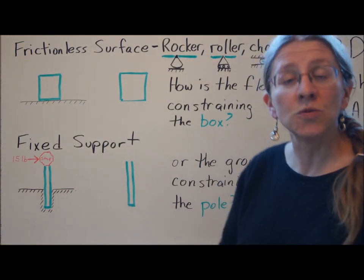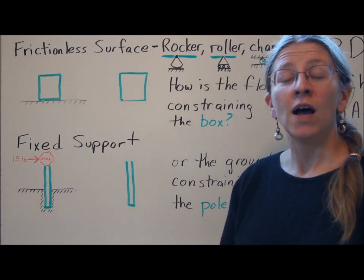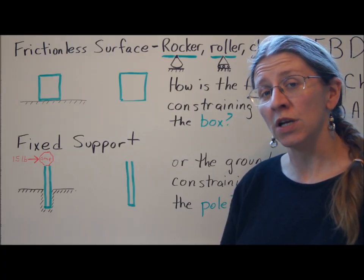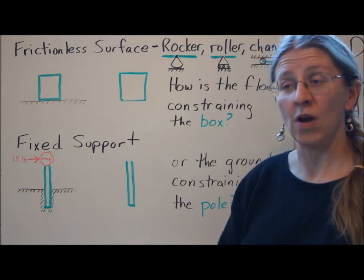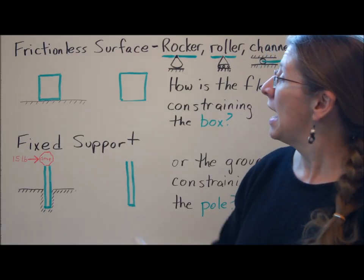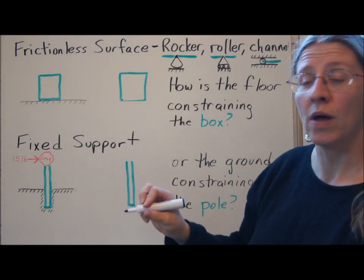So how do you do these reaction loads? Each different kind of worldly constraint puts a different set of loads on your object. For example, a frictionless surface. If you have a coffee cup sitting on a perfectly frictionless surface, what do we put on our object when we take away the world?